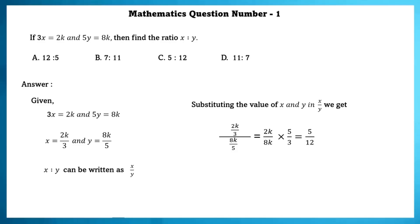Substituting the value of x and y in x by y, we get 2k by 3 by 8k by 5, which is equal to 5 by 12. Now 5 by 12 can be written in the ratio format as 5 is to 12.